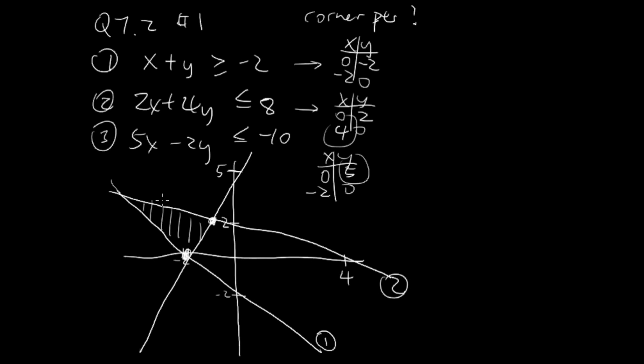And here are the corner points: 1, 2, and 3. I'm going to call this point A, I'll call this point B, and I'll call this point C.